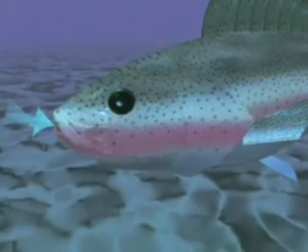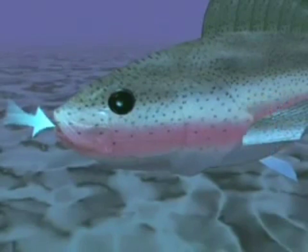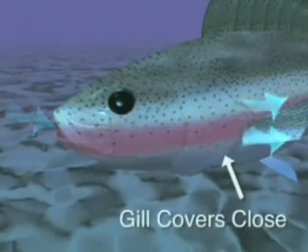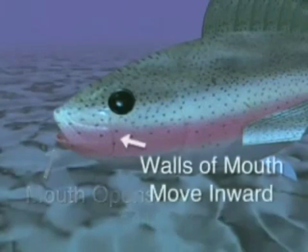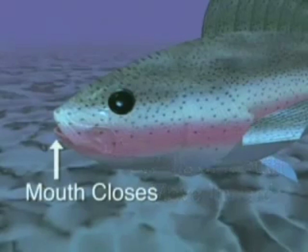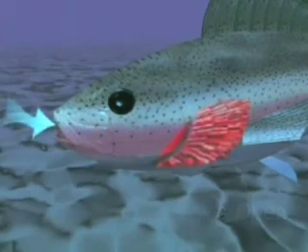To get oxygen, fish gulp water through the mouth and pump it over the gills. In many fish, the breathing process begins when the gill covers close and the mouth opens. The walls of the mouth then move inward. The mouth partially closes and the gill covers open, forcing the water from the mouth into the gill chambers.